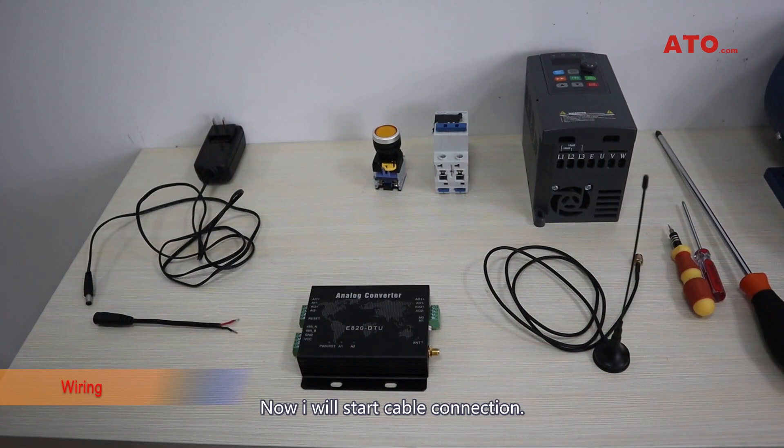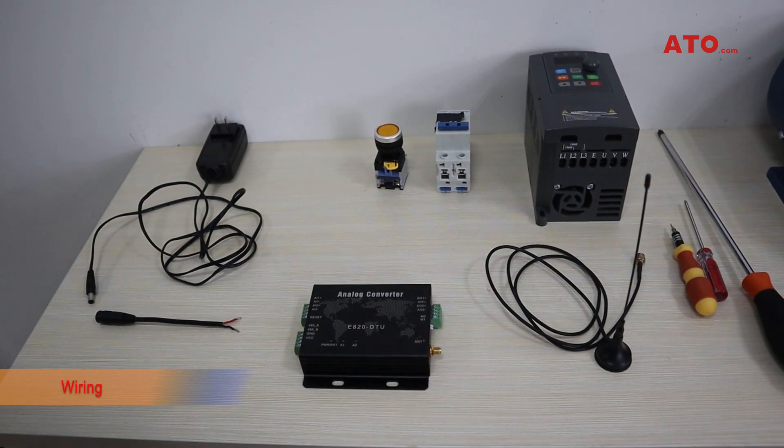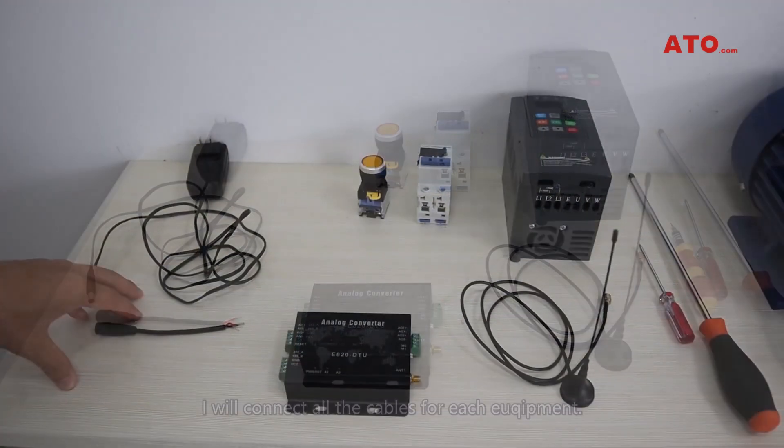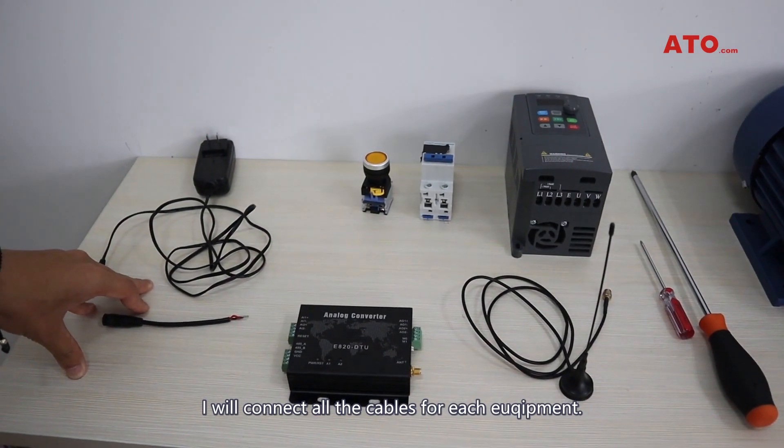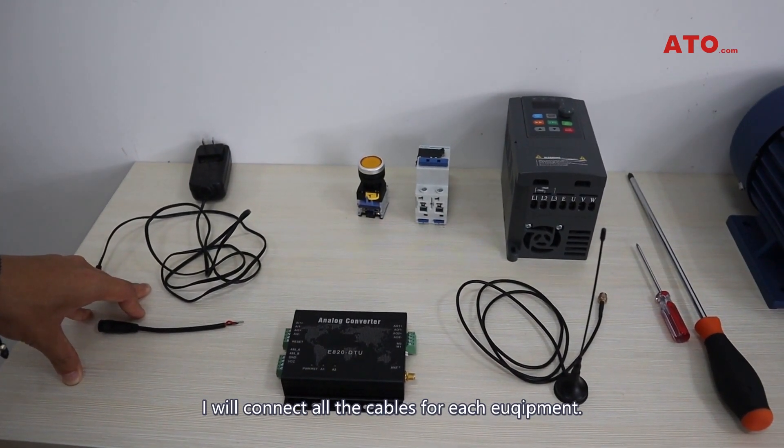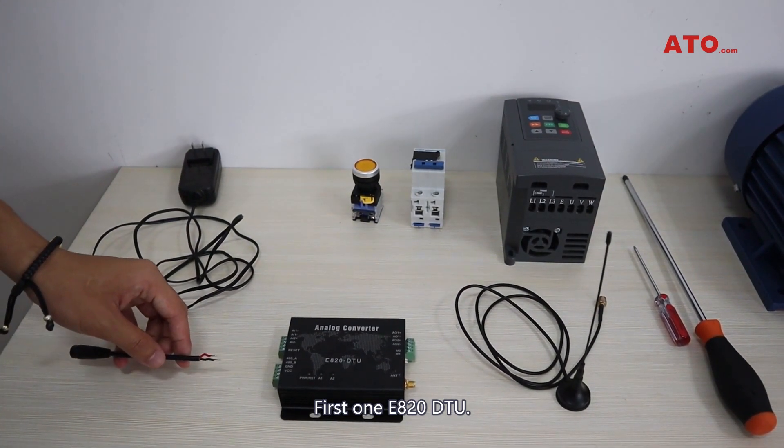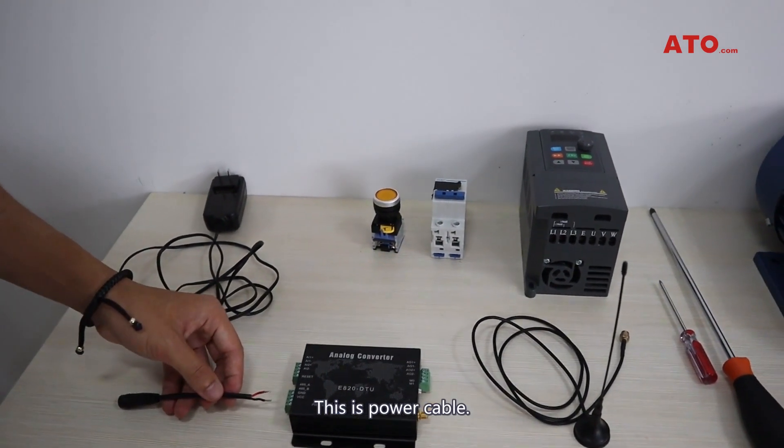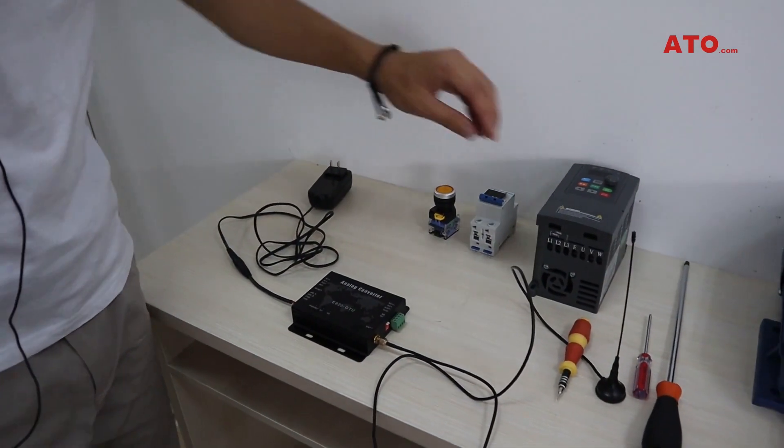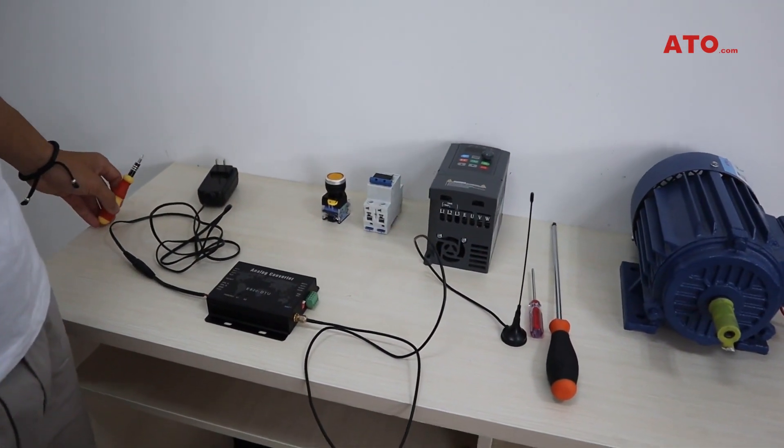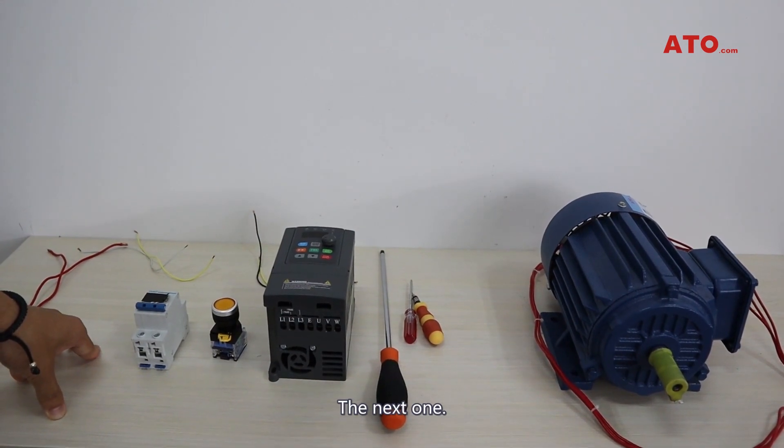Now I will connect all the cables for each equipment. First one, E820 DTU. This is the power cable. The next one, I will connect the variable frequency drive with the motor.